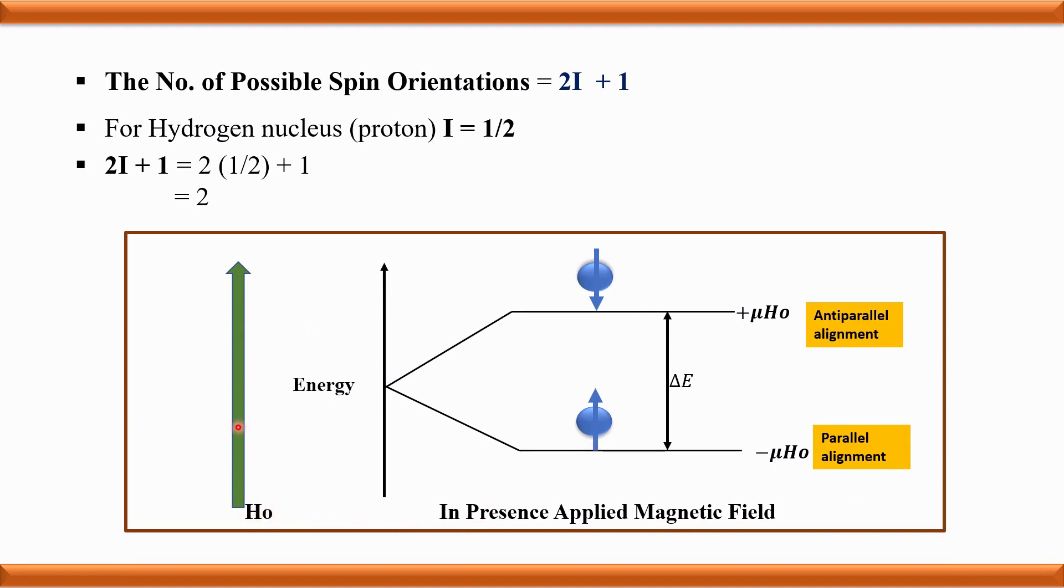One orientation is parallel and the other is anti-parallel to the applied magnetic field. The parallel orientation is the low energy state, while the anti-parallel is the higher energy state.